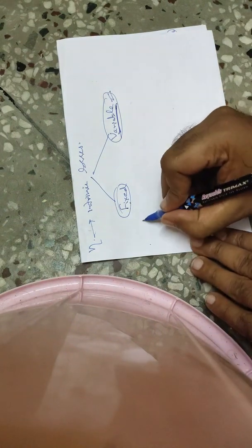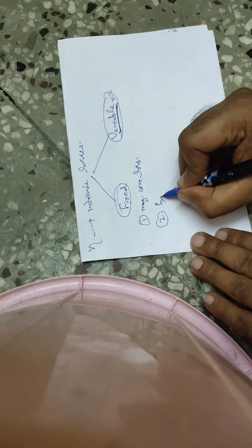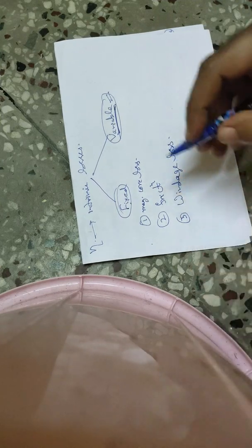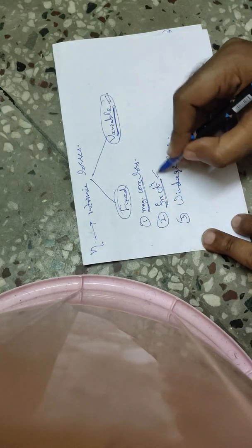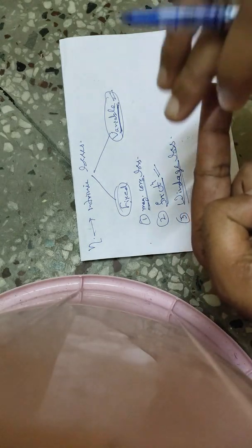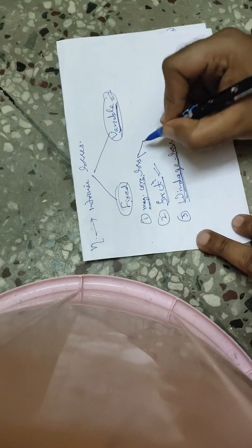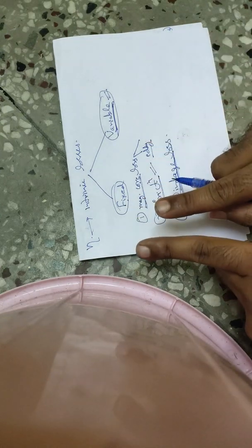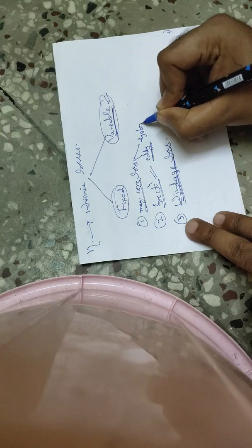Fixed losses include: first, magnetic core loss; second, friction loss; and third, windage loss. Windage loss means that when current flows through the winding, not everything is transferred — some losses occur in between. Magnetic core loss is of two types: eddy current loss and hysteresis loss.